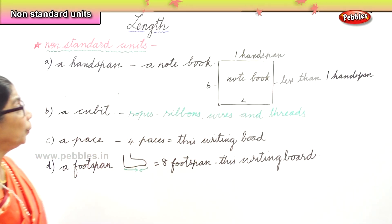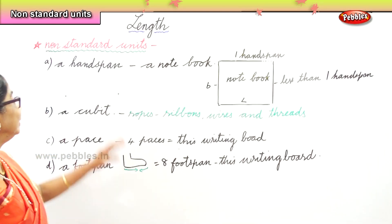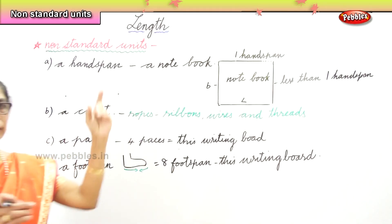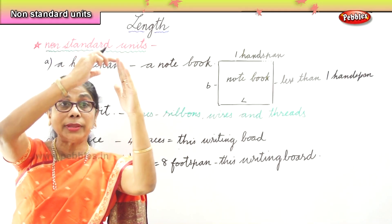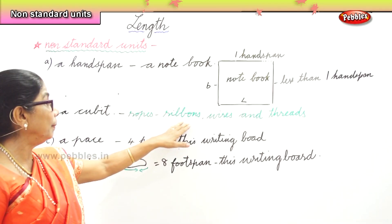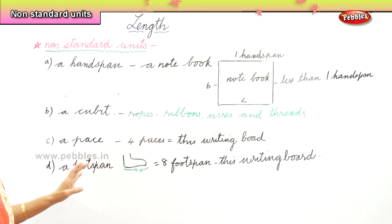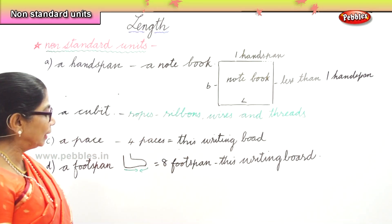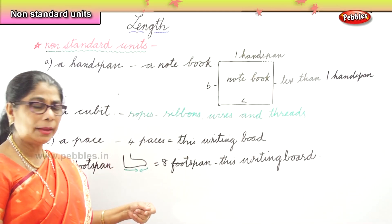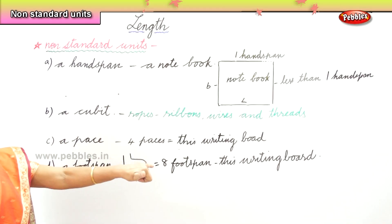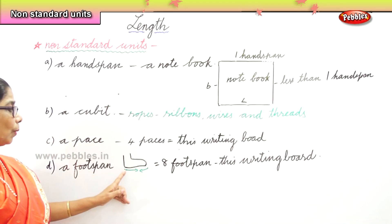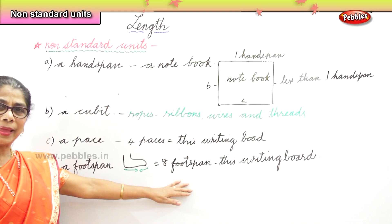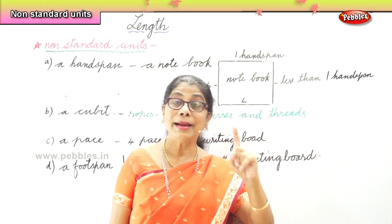Now these are the four non-standard units of measuring. First, a hand span — we measured a notebook. Second, a cubit — from the elbow to the end of your tall finger — you measure ribbons, robes, wires, and threads. Third, a pace — this writing board is four paces. Fourth, the foot span — just like the hand span — this white board is eight foot spans. These are the four non-standard measuring units.